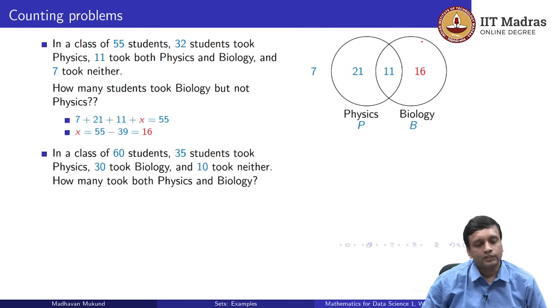Here is yet another version of this. We have 60 students in the class. Again, we know the total number of students in the class. We are told that 35 students took physics and 30 took biology and 10 took neither.